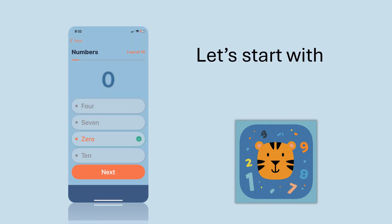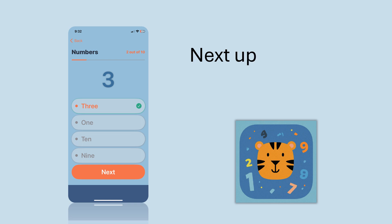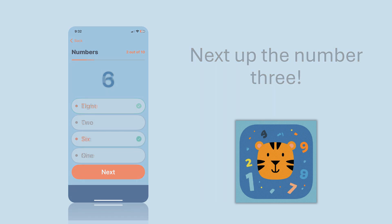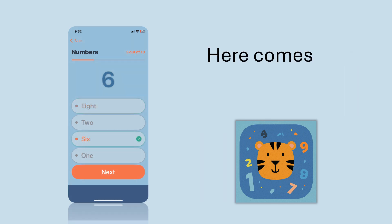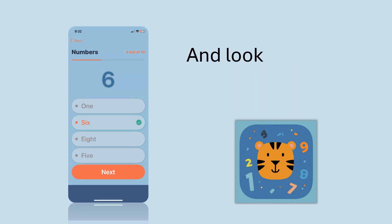Let's start with the number 0. Next up, the number 3. Here comes the number 6. And look, it's another number 6.